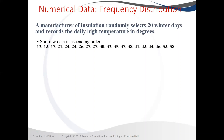First of all, since we're working with numerical data, we know that when we get the data we need to sort it from lowest to highest in ascending order. We can see that the lowest temperature was 12 and the highest temperature was 58. Let's start building the frequency table. The first step is to calculate the range, and the range is your highest value minus the lowest value. Our highest value is 58 and our lowest value is 12, so it's 58 minus 12, which gives us 46.